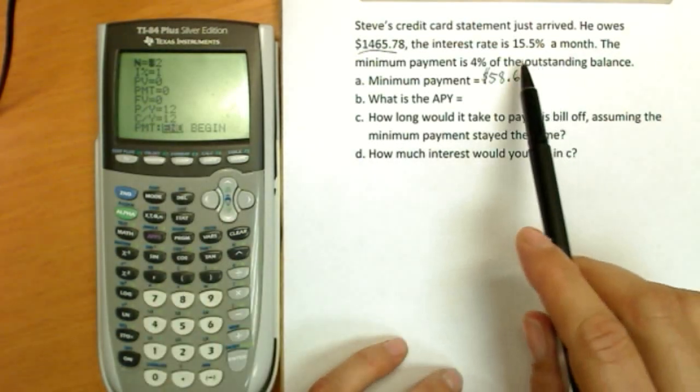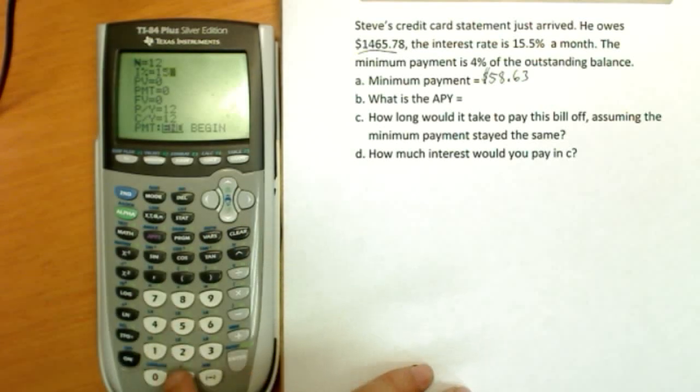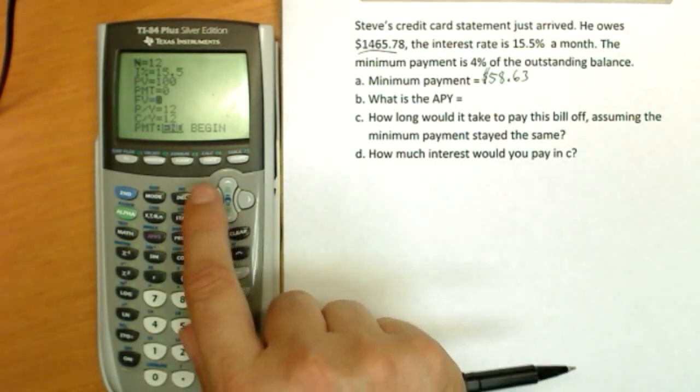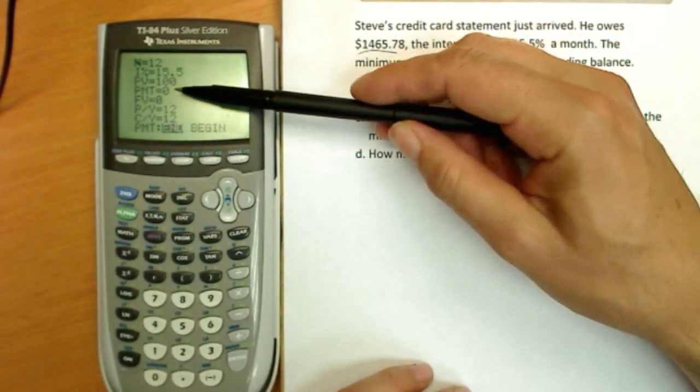This is 15.5% a month, so we're gonna put in the proper interest rate: 15.5%. And I'm simply gonna assume this balance is $100. It doesn't matter what his balance is; this will make it easier to read in the compounding. And we don't make any payments for APY.